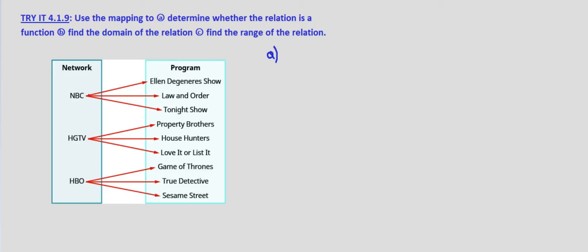Well in this case we can see that all three of our inputs, NBC, HGTV, and HBO, they all have multiple outputs.